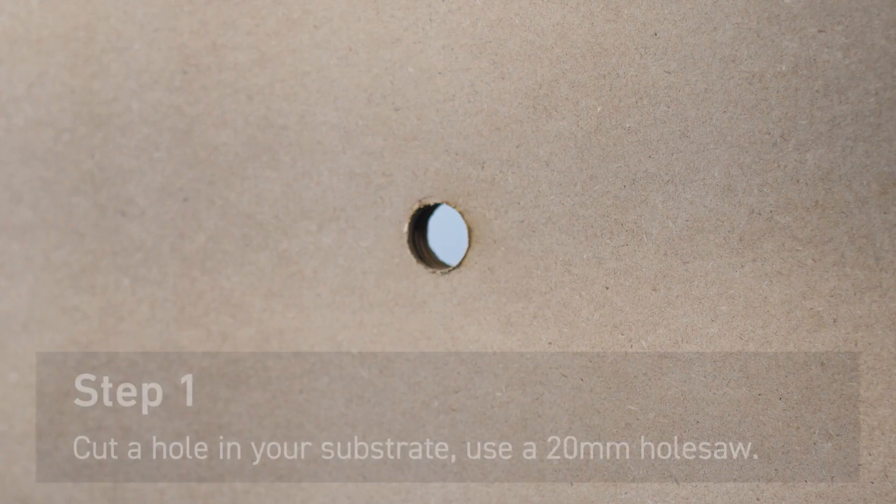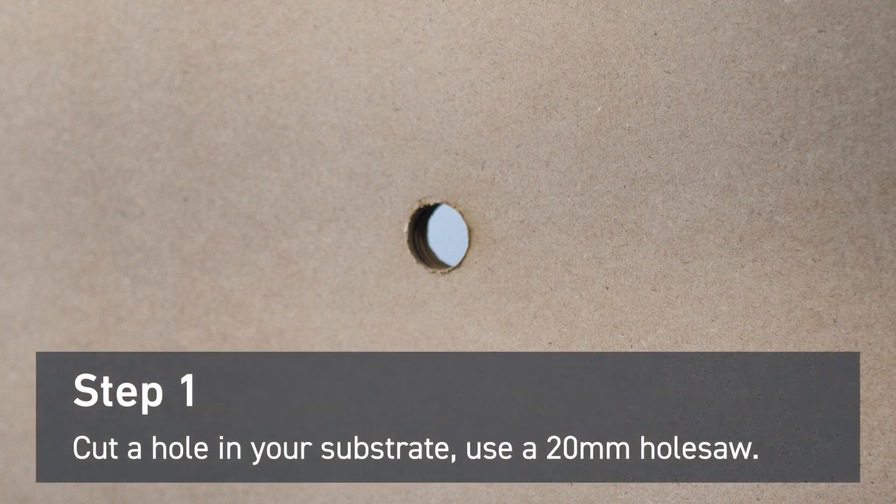First, cut a hole in your substrate for cabling access. Use an appropriate size. We've used a 20 millimeter hole saw.